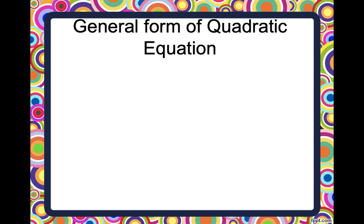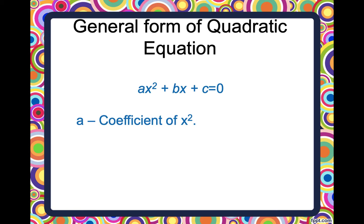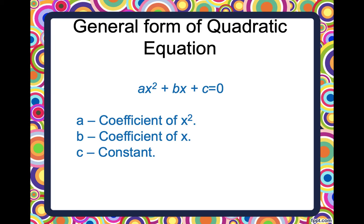Now let us talk about the general expression for a quadratic equation. We have ax² plus bx plus c is equal to 0, which clearly represents a quadratic equation because the degree of x here is 2. In this equation, a is the coefficient of x², b is the coefficient of x, and c is a constant.